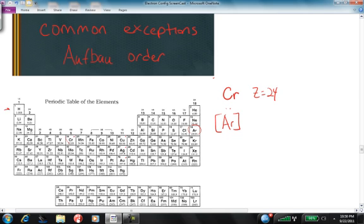This is period 1, 2, 3, 4. So we go to the 4s and fill it as we move across, because that gets us up to 20 electrons.